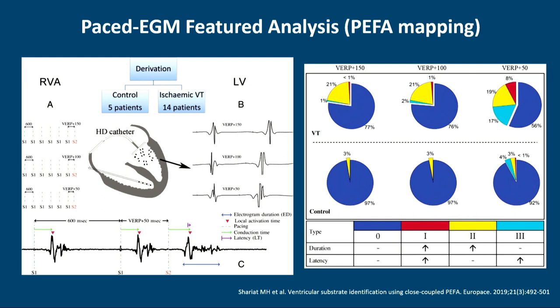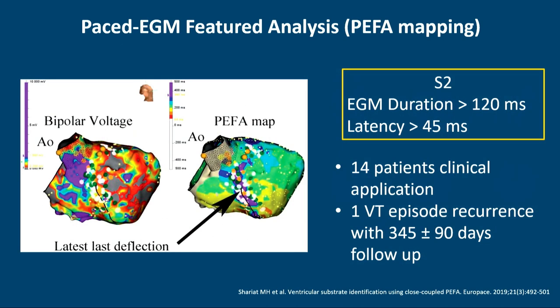Sharia Tatal's study in EuroPACE 2019 focused purely on analysis of the S2 in 14 ischemic patients compared to normal LV controls. Based on S2 characteristics—if the EGM prolonged or if there was increased latency (described as type 1, 2, or 3 responses)—these were more likely targets for ablation. Ablation was based on S2 EGM duration greater than 120 milliseconds or stim-to-EGM onset greater than 45 milliseconds. One-year success rate was good.